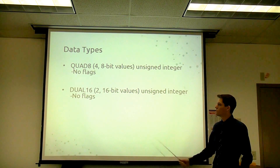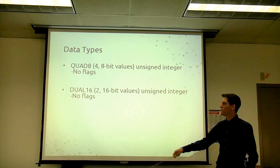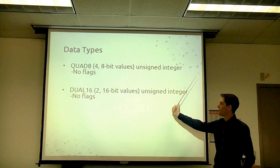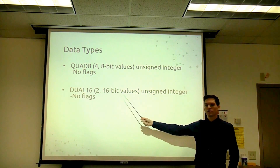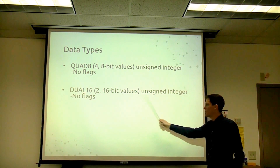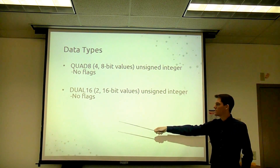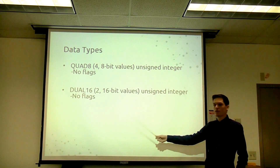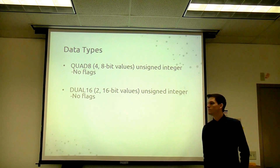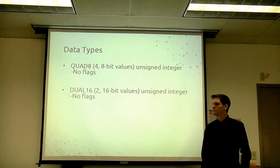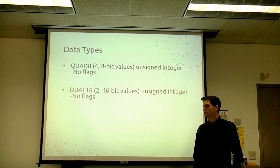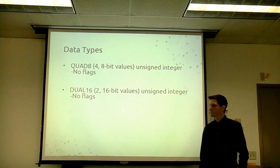We also have two new data types: a Quad 8, which is four 8-bit values, both unsigned — no flags are currently updated. And a Dual 16, which is two 16-bit values, unsigned again, with no flags being updated. Although it says no flags, the flags actually do exist — at least carry and overflow — they just aren't implemented; there are no instructions that take advantage of them yet.